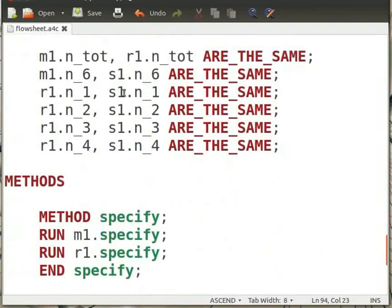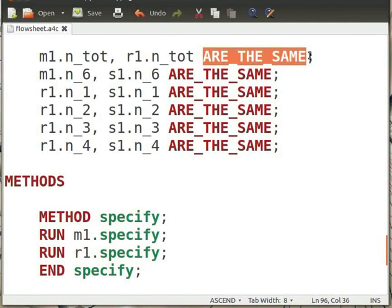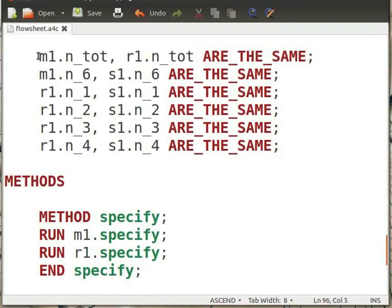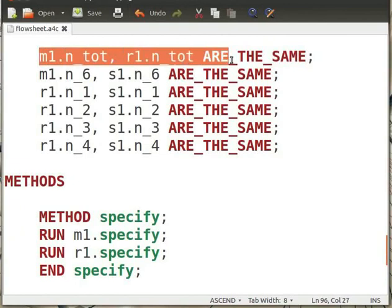Now let us state that output from mixer is same as input for the reactor, and the output of the reactor is same as input to the separator. We equate the two with the help of the operator ARE_THE_SAME. ARE_THE_SAME is a merging operator. It merges different models or variables into one. For example, we write M1.n_tot, R1.n_tot ARE_THE_SAME. This saves us from creating additional different equations.